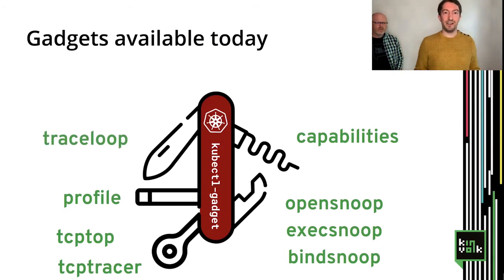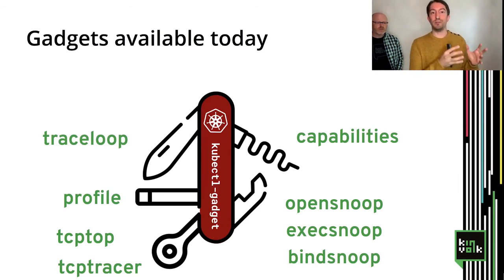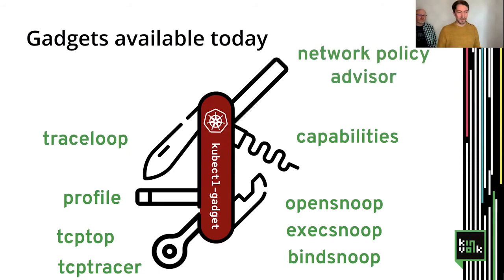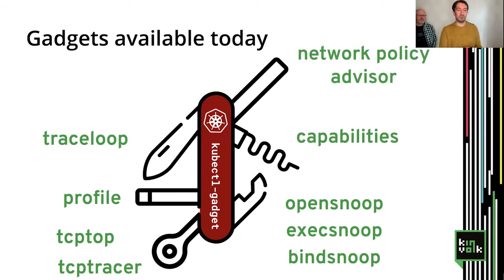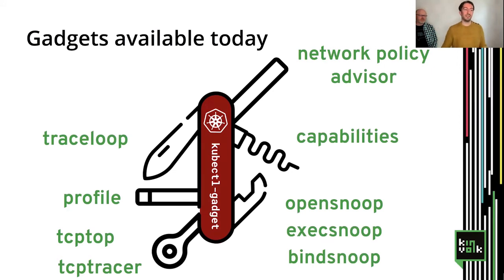Trace Loop is like a flight recorder — a record of the syscalls made by all pods, kept in memory in a ring buffer. Just in case something crashes, you can ask what happened and see the last few syscalls exercised. The last gadget is Network Policy Advisor — useful when implementing security on your pods without prior knowledge of the project, making it difficult to know what is supposed to talk to which other pod. If you use Network Policy Advisor, you can run your pods, see what network activity occurs, and it will automatically create network policies for you to review and use as a base.